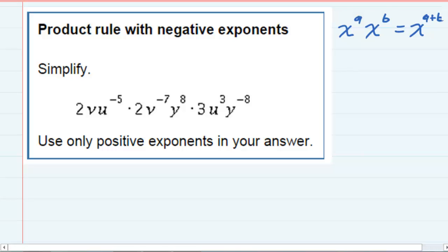So x to the a times x to the b would be x to the a plus b. So we can use that for our variables, but we also have some numbers there that are being multiplied, just regular numbers.